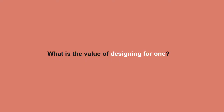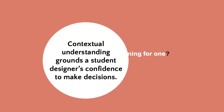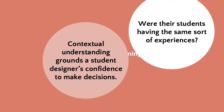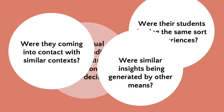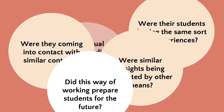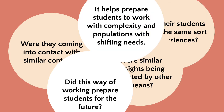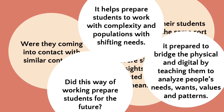The workshop also identified points of difference between the designing for one approach and modules at participants' own institutions, explored potential organizations that might best utilize the approach, and matched it to skills identified by the AIGA white paper Designer 2025. Although not explicitly intended, initial reflection dealt with the value of designing for one. One primary discussion point was context — how contextual understanding can ground a student designer's confidence to make decisions and whether students were having similar experiences at their own schools.